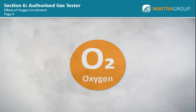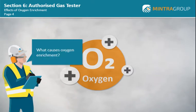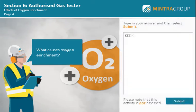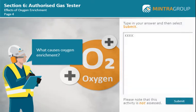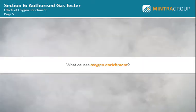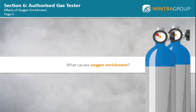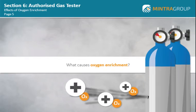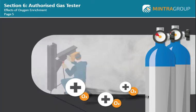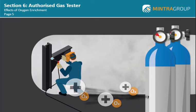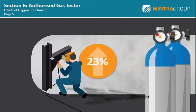Whilst oxygen deficiency can be very dangerous, oxygen enrichment can be equally so. What causes oxygen enrichment? Type in your answer and then select submit. Oxygen levels in the atmosphere can increase due to a leak in a compressed oxygen system, such as oxypropane cutting equipment. This is particularly dangerous if the occurrence happens in a confined space, and if the levels of oxygen increase to above 23%, this can have a dangerous effect on the human body.